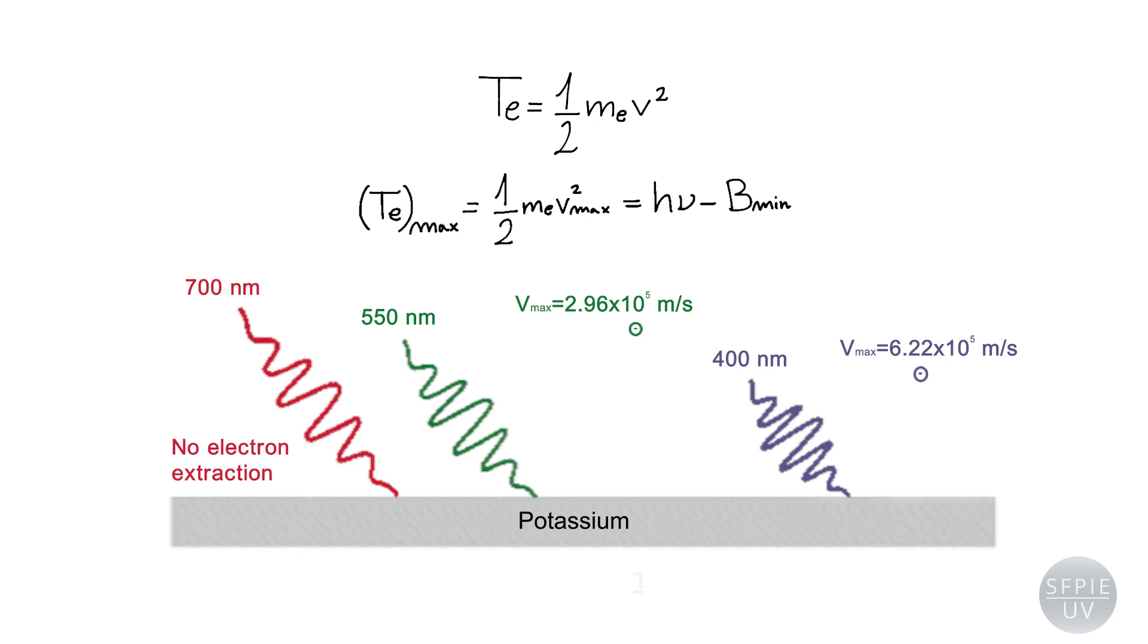It also explains the existence of a minimum frequency for each material, nu minimum, in order to produce the photoelectric effect. This corresponds to h nu minimum equal to b minimum because, with a lower frequency, the photons do not have enough energy to extract electrons from the material.